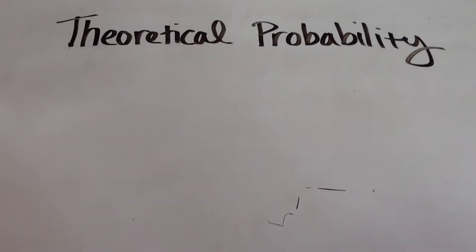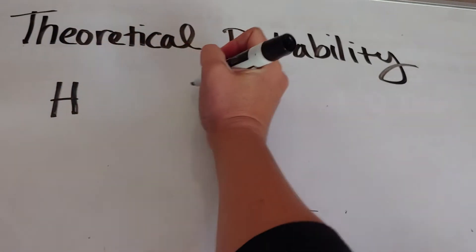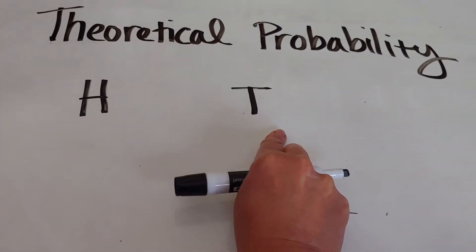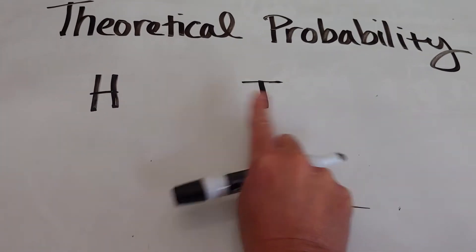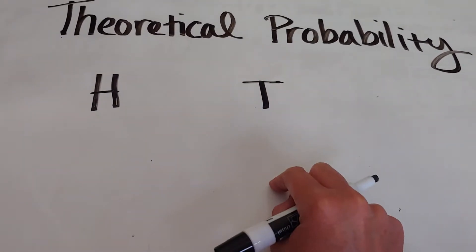So if you think about it, if I flip a coin three times, the first time I flip I could get a heads or a tails. The second time I flip, I could get another heads or another tails, and then the third time, another heads or another tails.